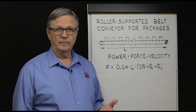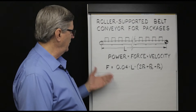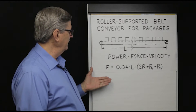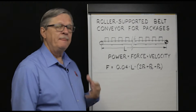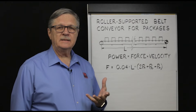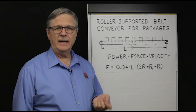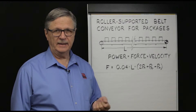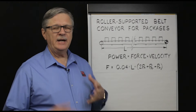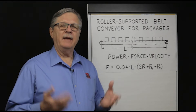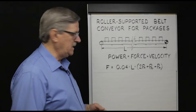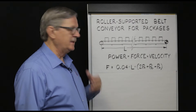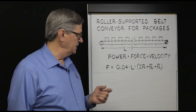The equation which Rulmeca uses to calculate required belt pull on a roller-supported belt conveyor for packages applies when the brand of roller and belt have not yet been selected and the conveyor is more or less an average type — neither particularly big nor particularly small. The simplifying assumptions are as follows: we use 0.04 for roller bearing friction and use L to specify conveyor length.